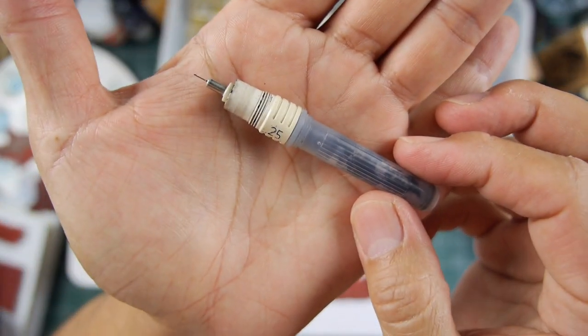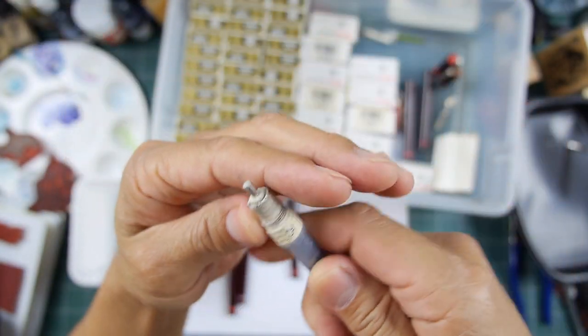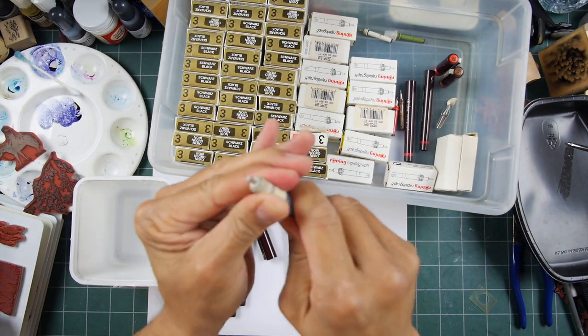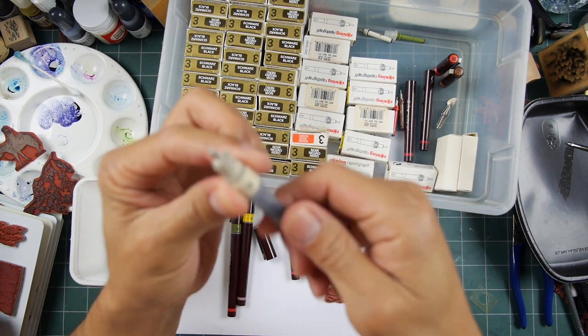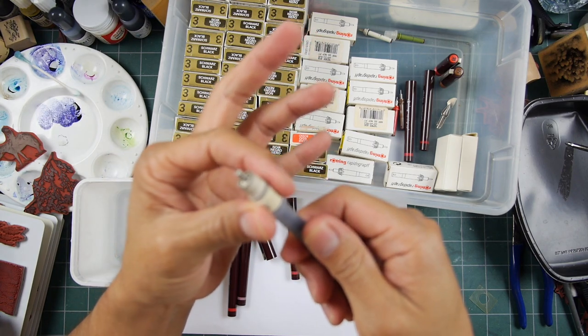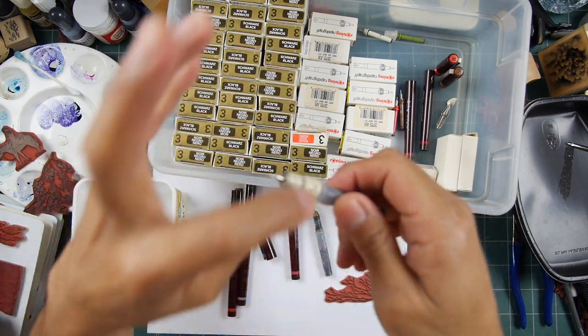So these pens have this sheath on here and you unscrew that. Now if they've been sitting around and they're all dried out, sometimes they'll have some dried ink in here. This can be a little bit hard to remove.